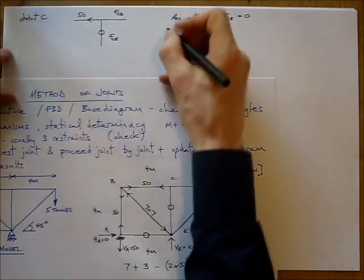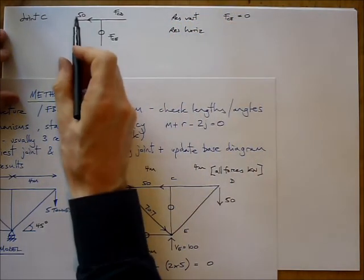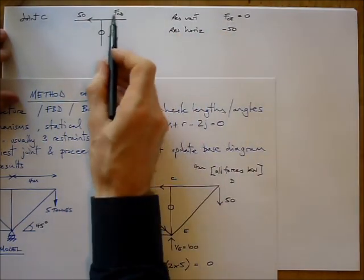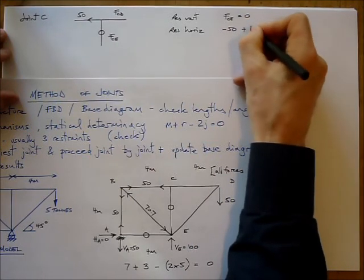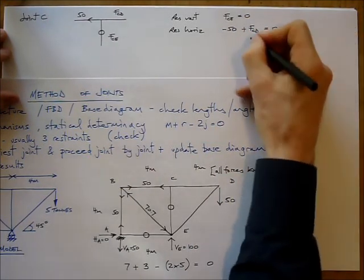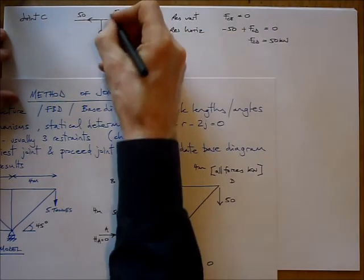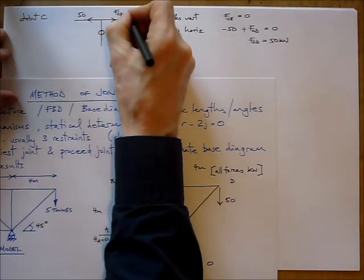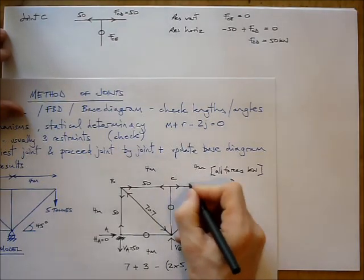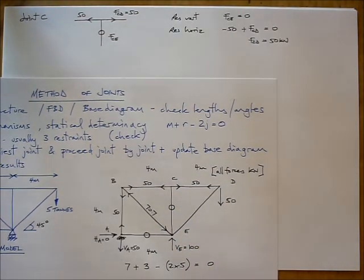Now for this joint, I'm going to resolve horizontally. Resolve horizontally. There we go. I've got minus 50. And I'll assume that FCD is acting to the right, so it's positive. Plus FCD. All add up to zero. Therefore FCD equals 50 kN. And it is indeed acting to the right. Go back to our base diagram. Add that on. Okay. We're getting close. Just a couple more joints to go.